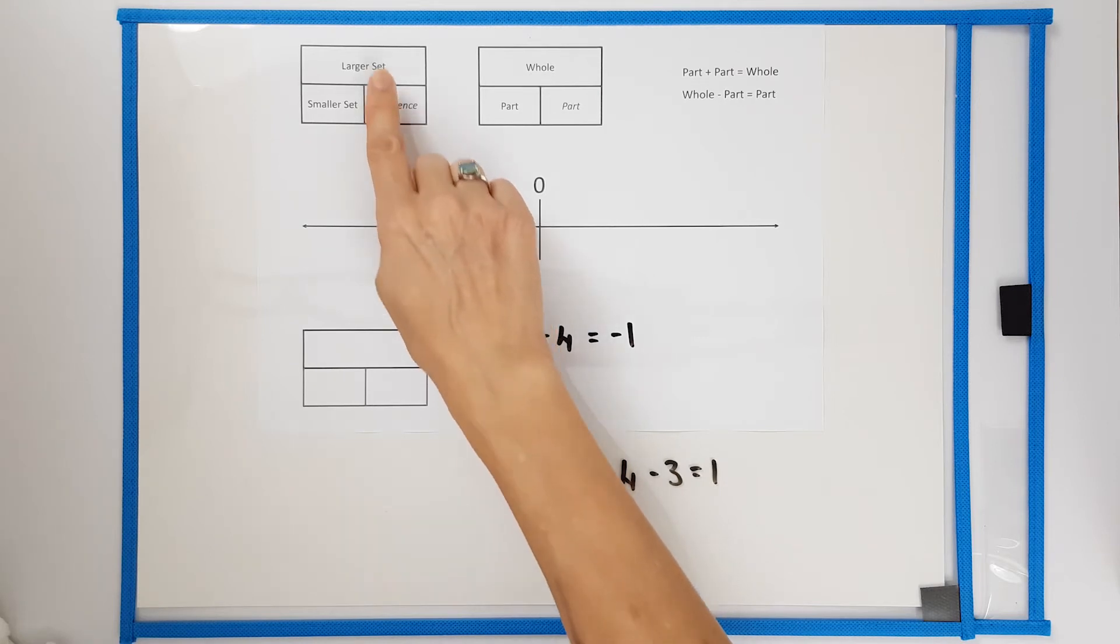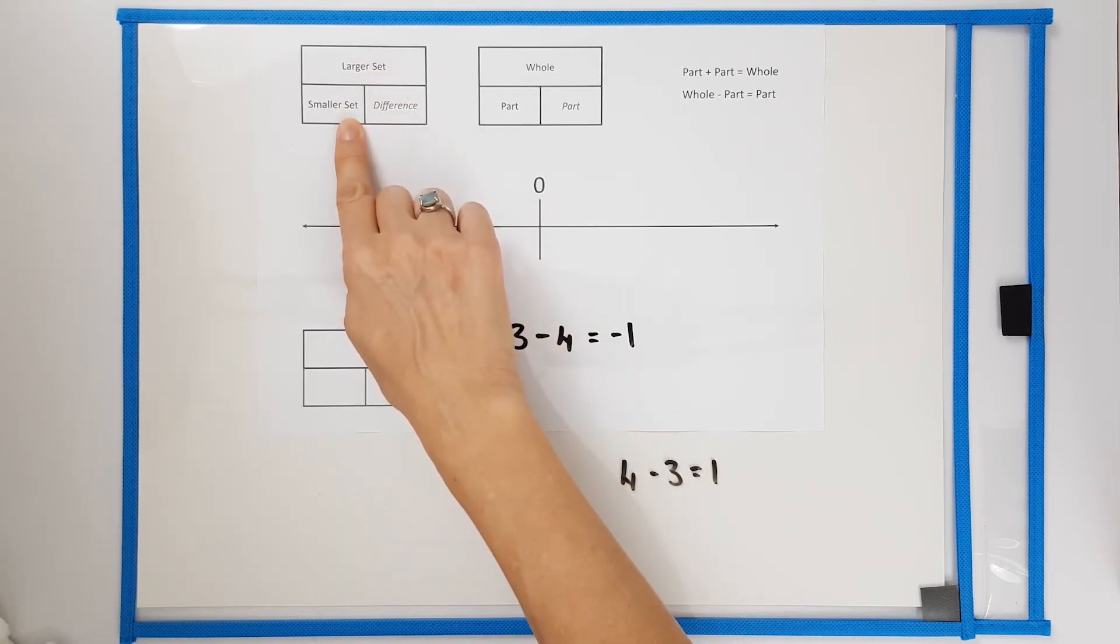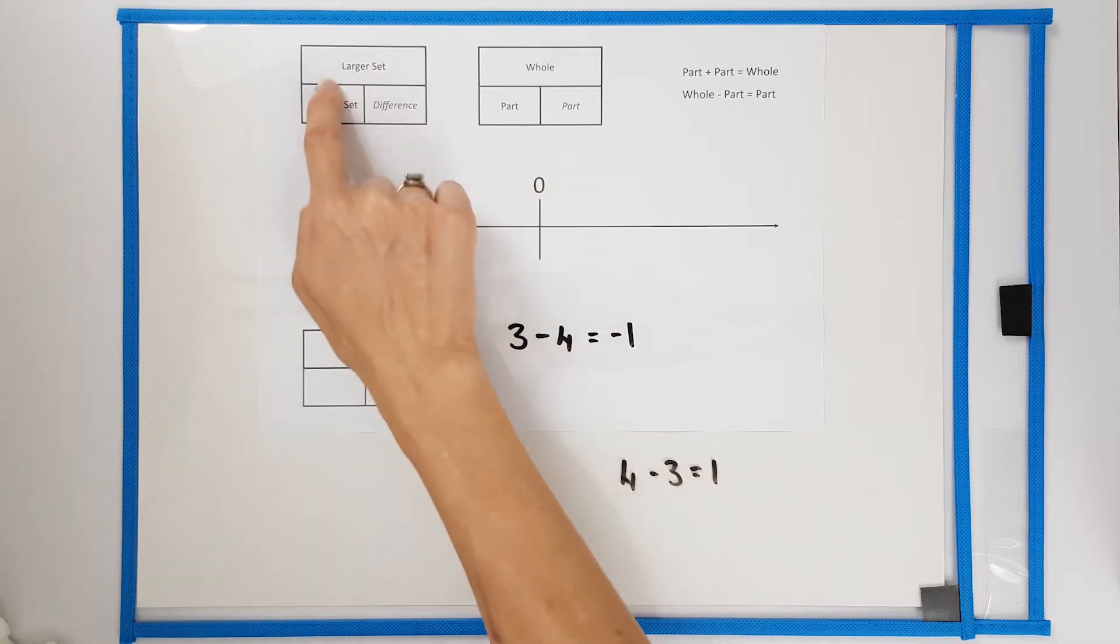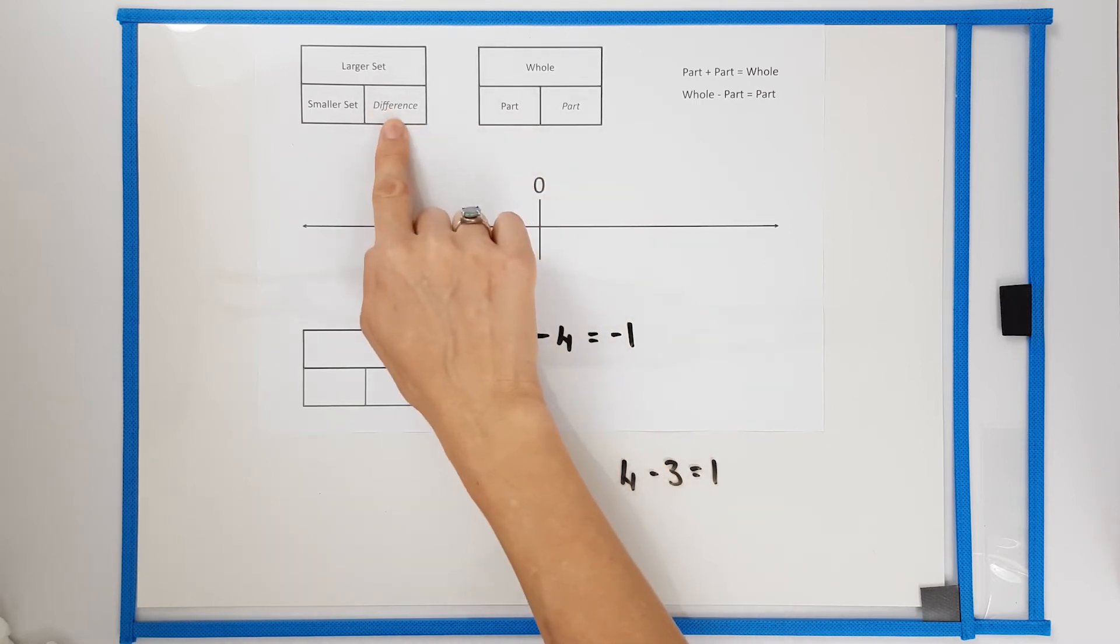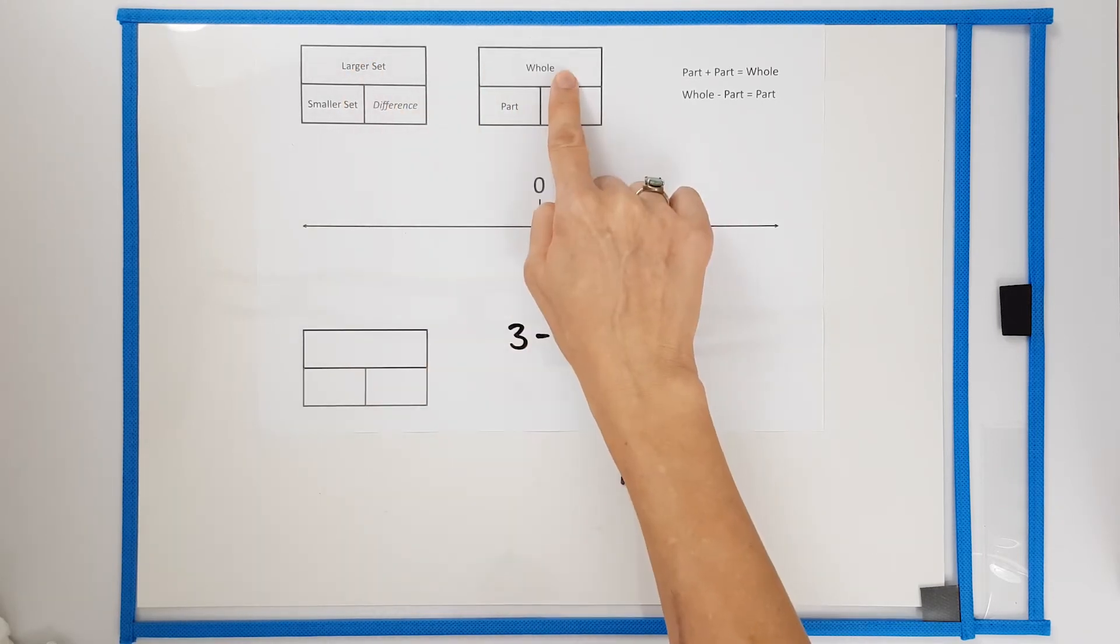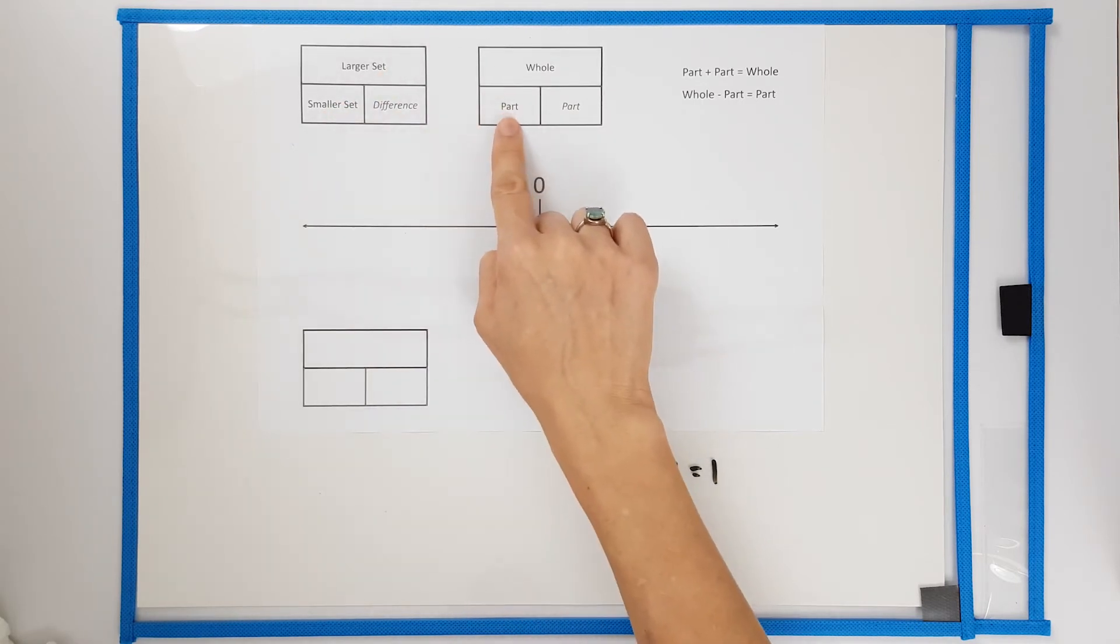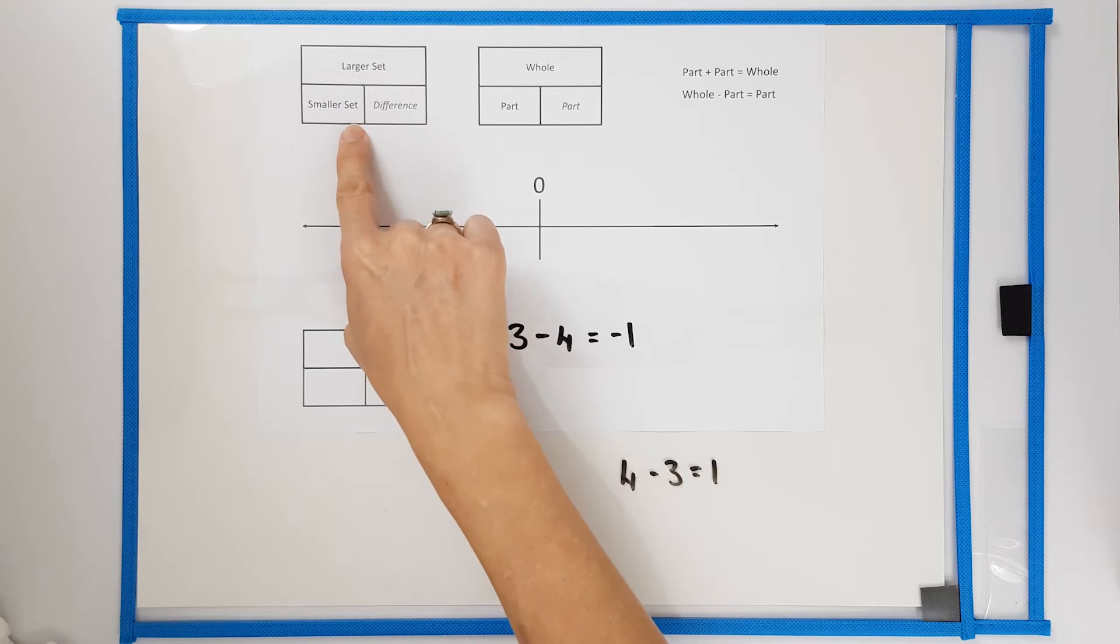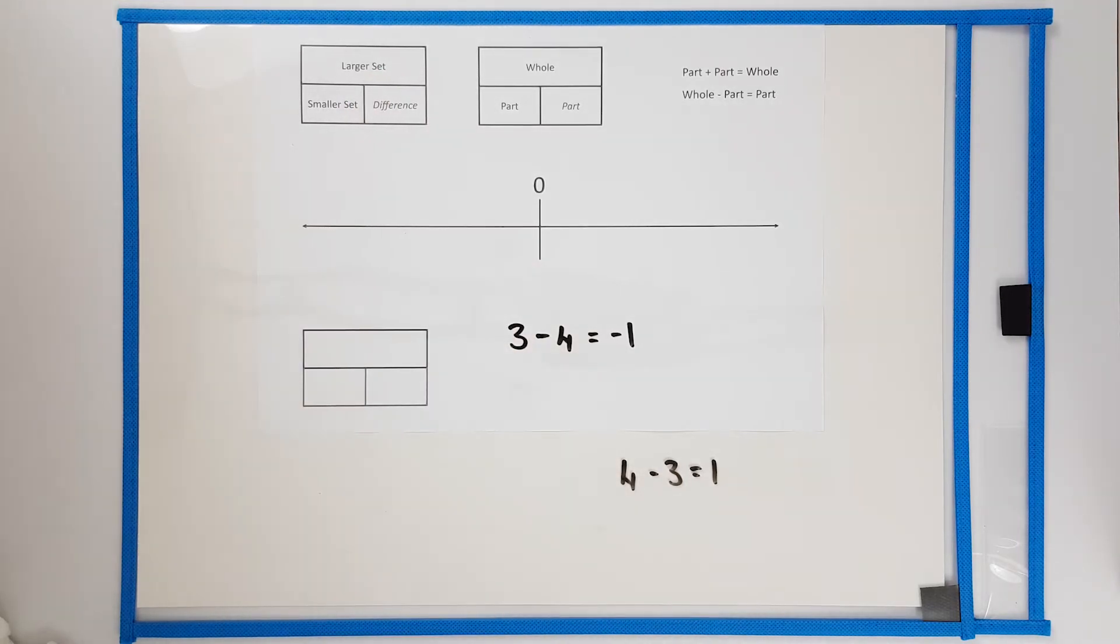When we are comparing two sets you do place the larger set as the whole. Notice I'm not saying the larger or bigger number and the smaller set becomes a part. The other part is the difference between the two sets. So in this activity we are going to have to identify the larger set as the whole, the smaller set as the part and the difference as the other part. Just be careful you use the word set and don't accidentally say the big number take the small number.